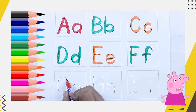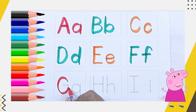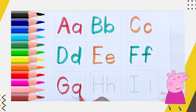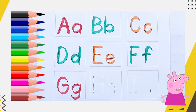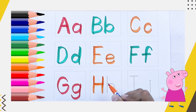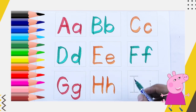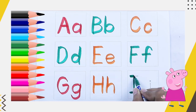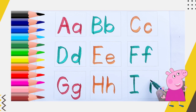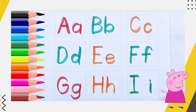Red color capital G, G for goat. Red color small g, g for goat. Orange color capital H, H for hand. Orange color small h, h for hand. Green color capital I, I for ice cream. Green color small i, i for ice cream.